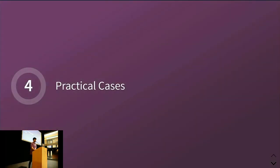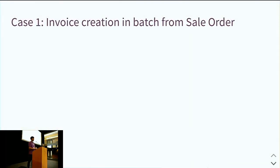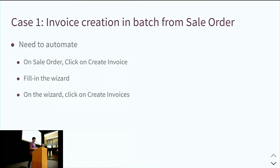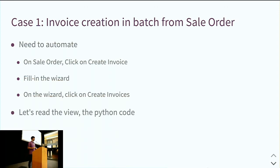Let's see the practical cases. The first case: I need to develop something — I want to automate invoice creation from a sale order. Basically, I go to the sale order, click on Create Invoice, a wizard pops up, I fill it, and then I click the Create Invoice button on the wizard. As a back-end developer, the first reflex is to read the view, see which method the button calls, and read the code. That can take five to ten minutes if you're experienced, or a few hours if not — you need a lot of knowledge to know where to look. But there is another way: look at what the network is telling us.